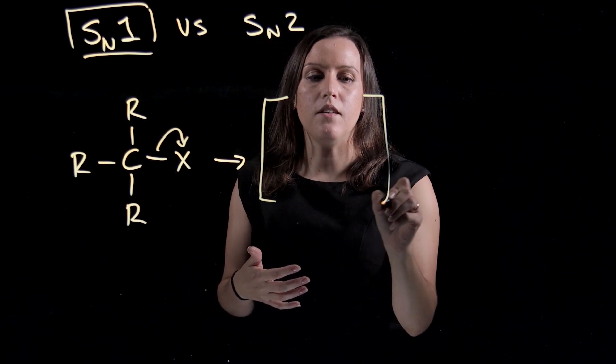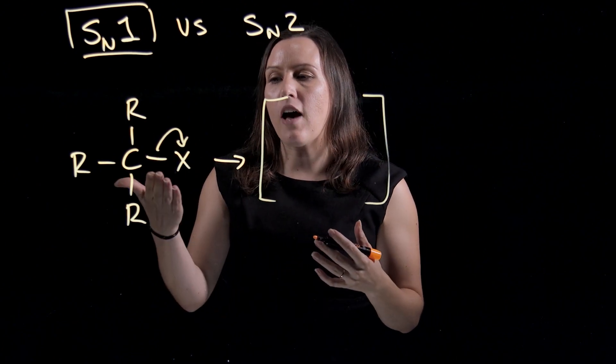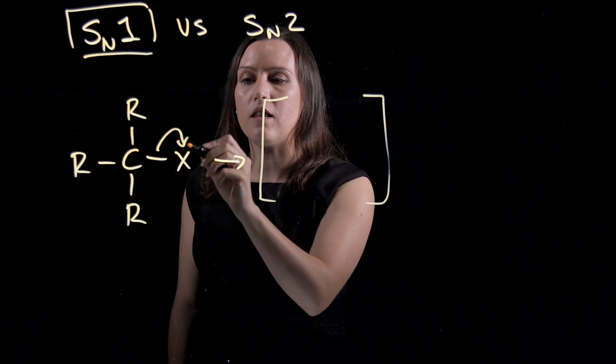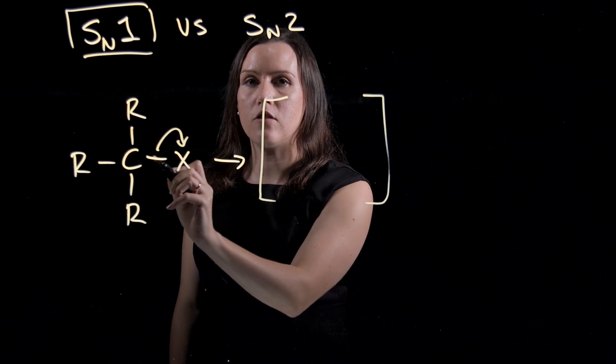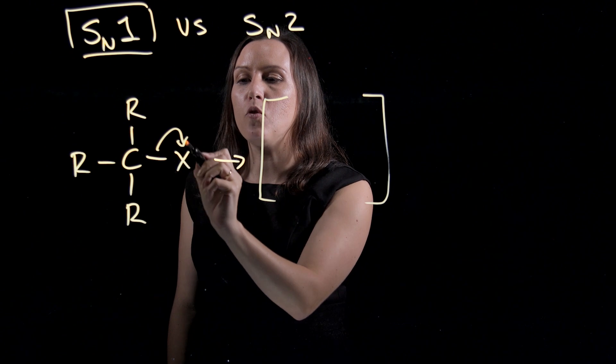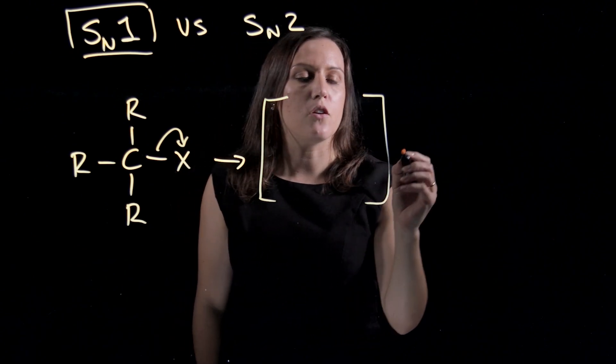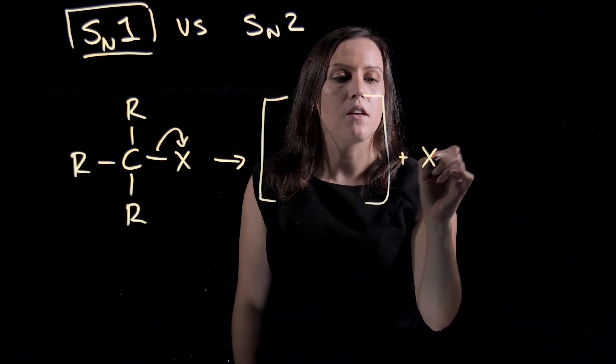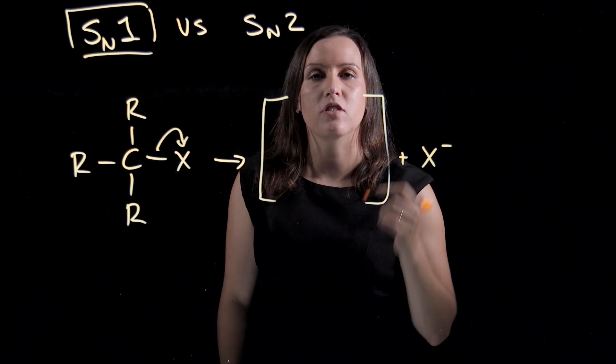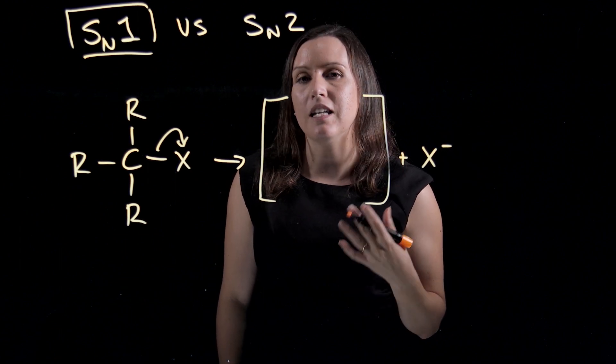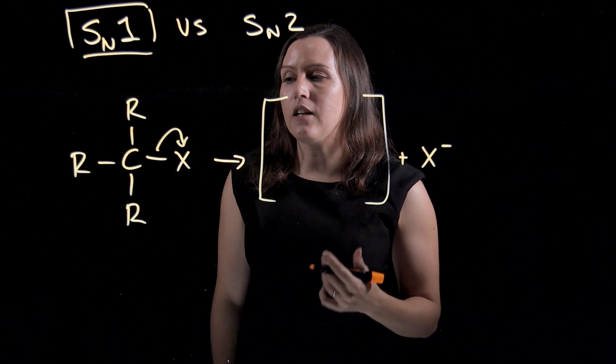So if this group leaves, remember with your arrows, by me drawing in this, it's saying that these two electrons involved in this bond have moved onto this X. So we've produced an X minus, so those two electrons give it a negative charge because it has an extra pair of electrons.